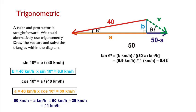We've already solved these, so that's 6.9 kilometers per hour over 11 kilometers per hour. That gives us a total of 0.63, and that's just a ratio. It doesn't have any units.